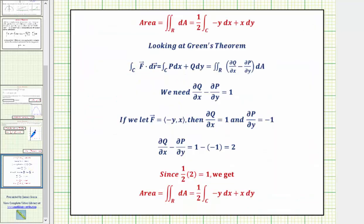Recognizing that this double integral gives us the area of region R and comparing this to Green's theorem, if we want this double integral to equal the Green's theorem double integral, we would need the difference of the two partial derivatives to equal one.